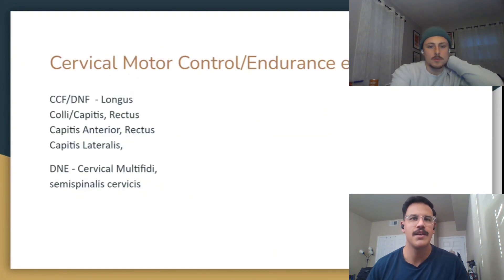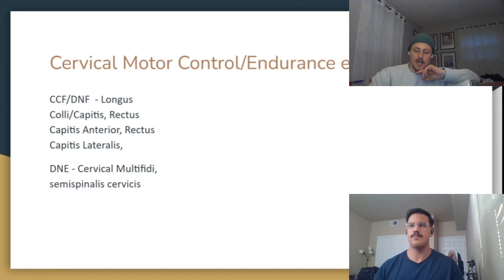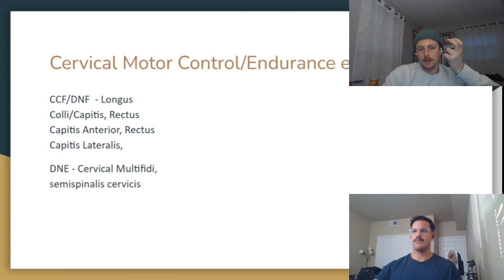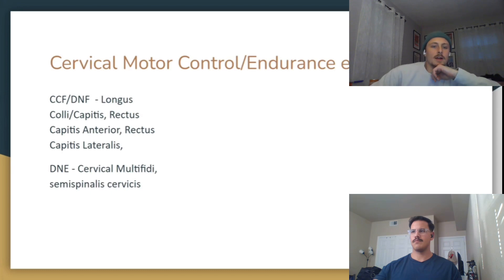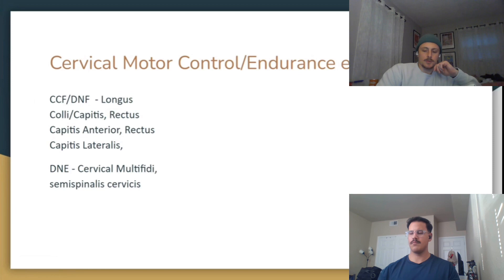Looking at cervical strengthening — if you forgot the muscles, I had to go back myself. Rectus capitis anterior and rectus capitis lateralis are there too. Always good to go back and review the anatomy. These are the muscles that help control upper cervical flexion, and these help with cervical extension. Those combined movements help with forward head posture — flexing the upper cervical region and extending through the lower cervical region moves us toward better posture.